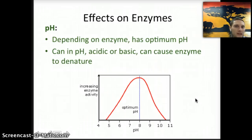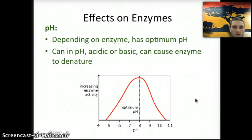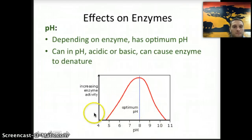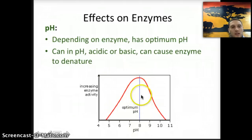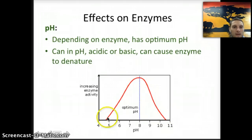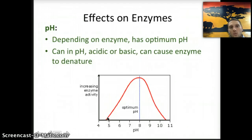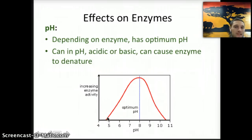pH can also affect enzymes quite a bit, depending on the type of enzyme. Different enzymes have different optimum pH values. On a pH scale on the x-axis and increasing enzyme activity on the y-axis, there's an optimum pH value — in this graph it's 8 — and above or below that, if it's too acidic or too basic, it can cause the enzyme to not work as well and eventually cause it to denature.